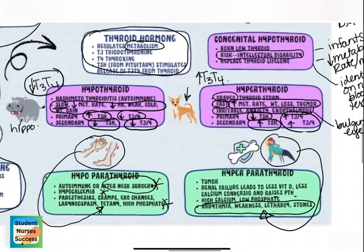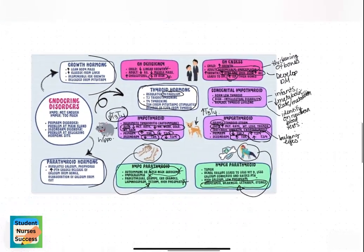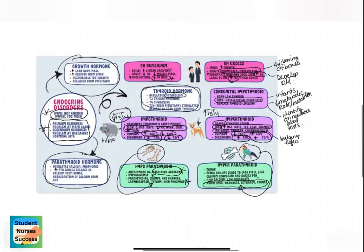And there you go — this is your completed map for endocrine Part 1. Remember to watch Part 2 where we will cover adrenal cortical disorders and ADH disorders. Subscribe and like our videos so you can keep up to date with all our new ones.